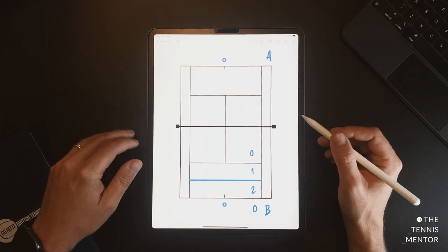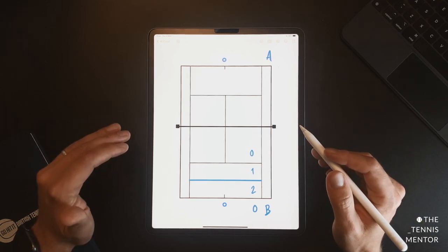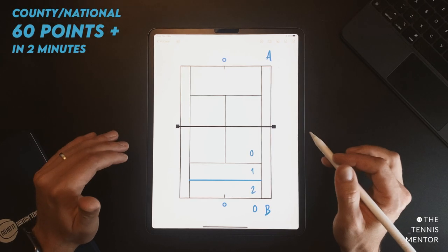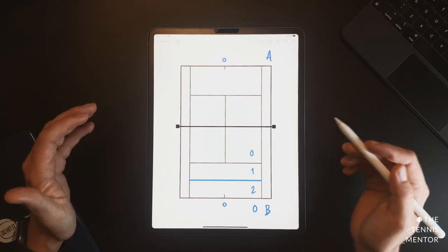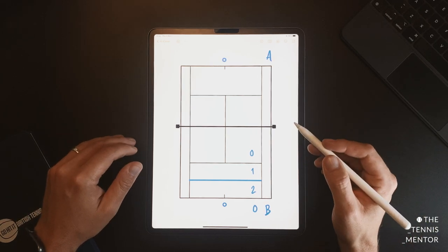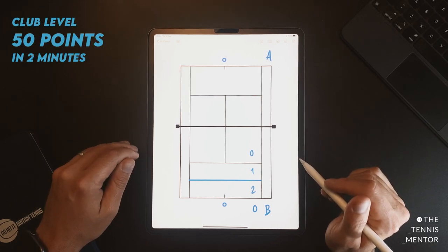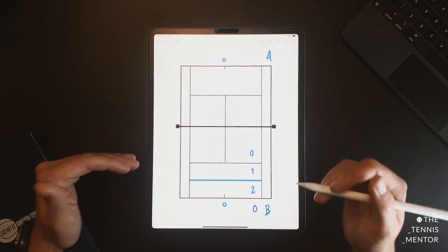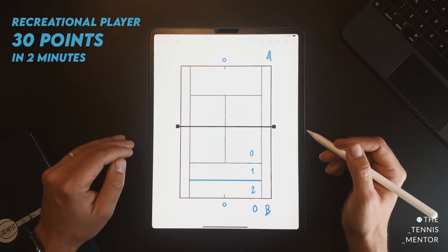To benchmark your scores, it's good to understand that a very good score, if you are a top county or national player, you should get in the region of 60 points. Now when I do this exercise with my men's and ladies teams at club level, they tend to get between 45 and 50 points across two minutes. If you're somebody newer to tennis and you're just trying to improve your consistency, then a score of 30 would be a pretty good start.